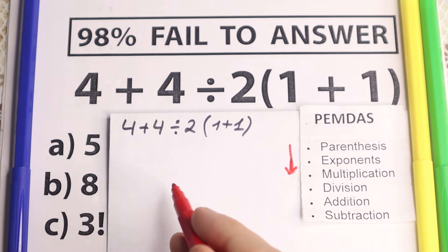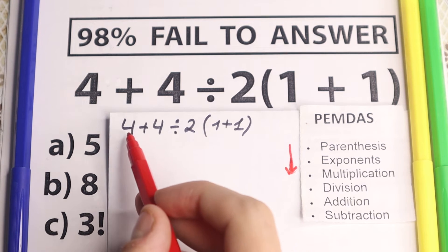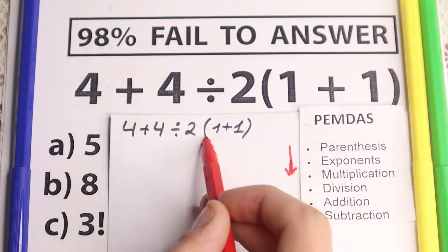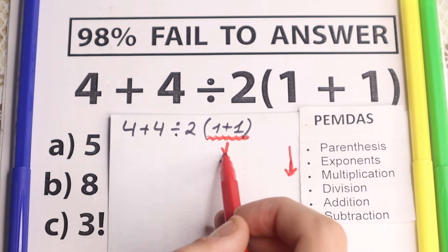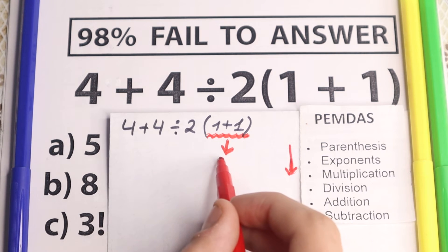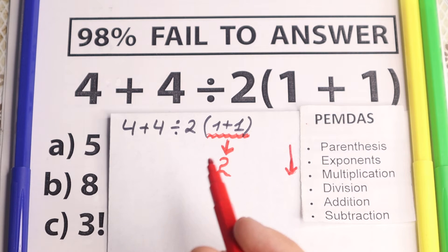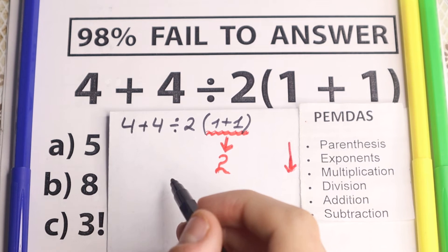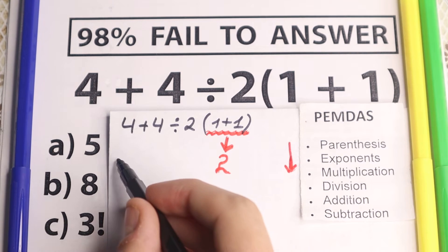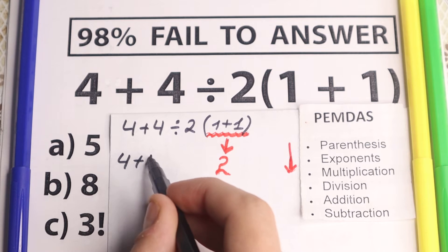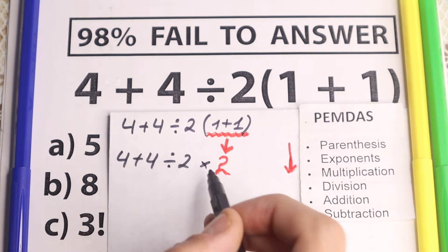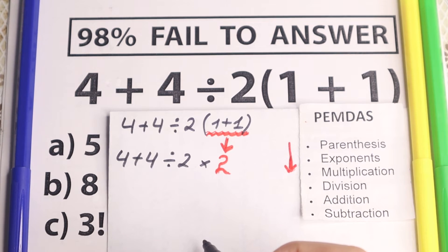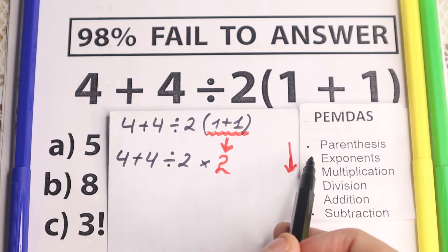Let's scan — are there any parentheses right here? Yes, we have the parentheses at the end of the expression. So we start with that: 1 plus 1 equals 2. We don't have parentheses anymore, so I just rewrite this problem from the beginning: 4 plus 4 divided by 2, times 2.